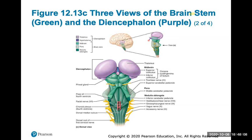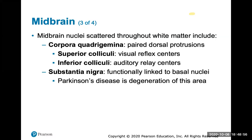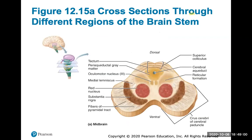In the midbrain there are visual and auditory reflex and relay centers. Specifically, the substantia nigra is functionally linked to the basal nuclei, and degeneration of this area is associated with Parkinson's disease — an important clinical connection to know.